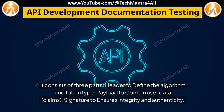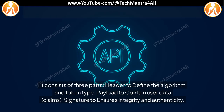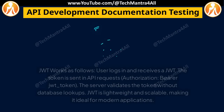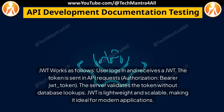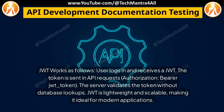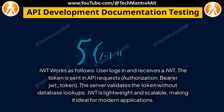The signature ensures integrity and authenticity. JWT works as follows: the user logs in and receives a JWT. The token is sent in API requests — Authorization: Bearer JWT_token. The server validates the token without database lookups. JWT is lightweight and scalable, making it ideal for modern applications.